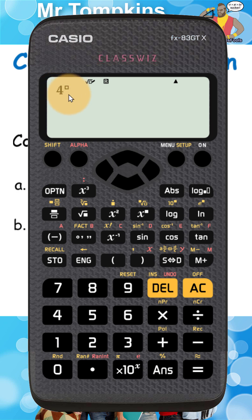You can see when I press it, it's going to write a little circle next to the 4. That represents 4 hours. Then I'm going to type in the 22 and then press that button again.